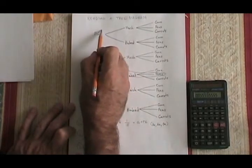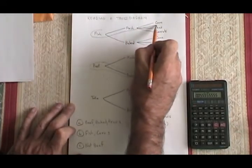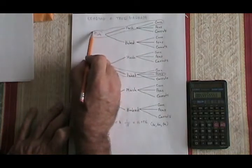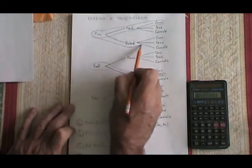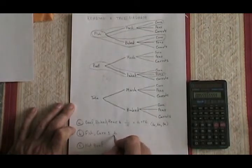We have this branch that goes from fish through mashed potatoes and includes corn. But we also have this branch, which goes from fish through baked potatoes and includes corn. There are two situations that have both fish and corn.